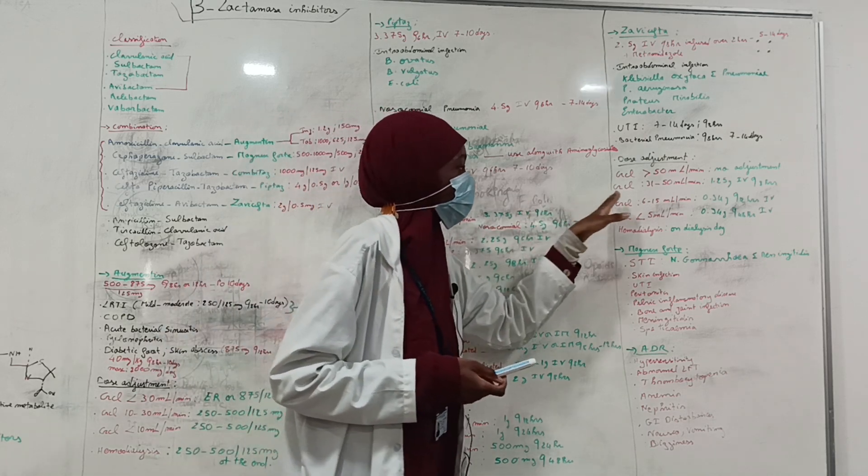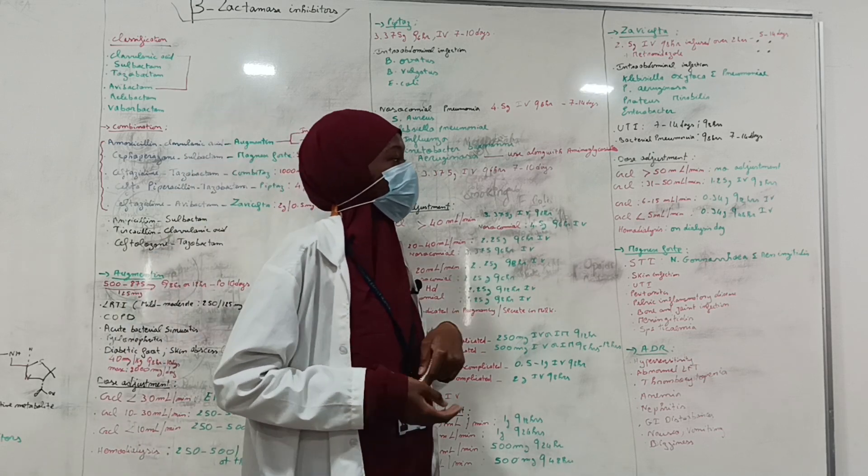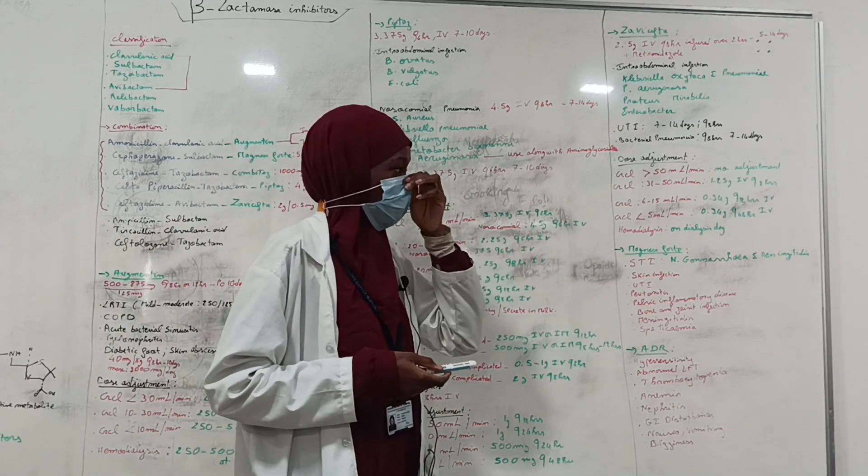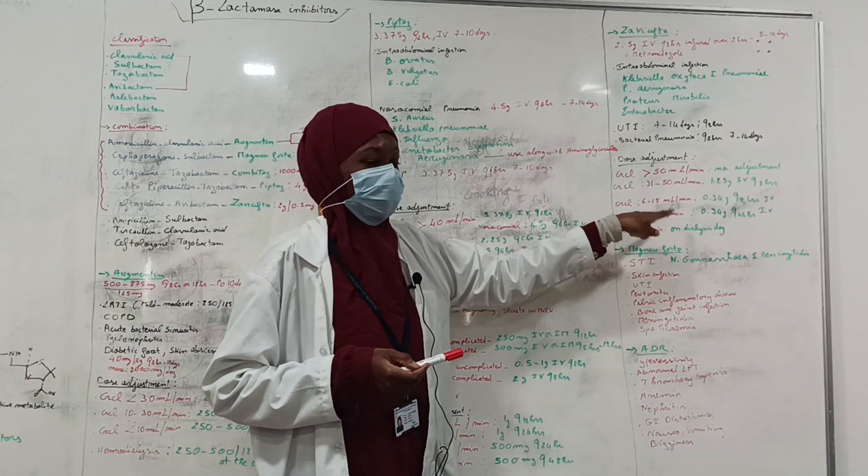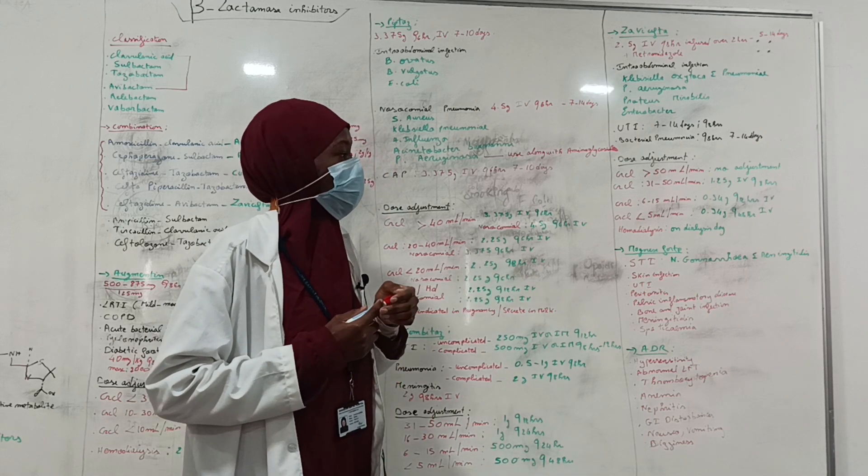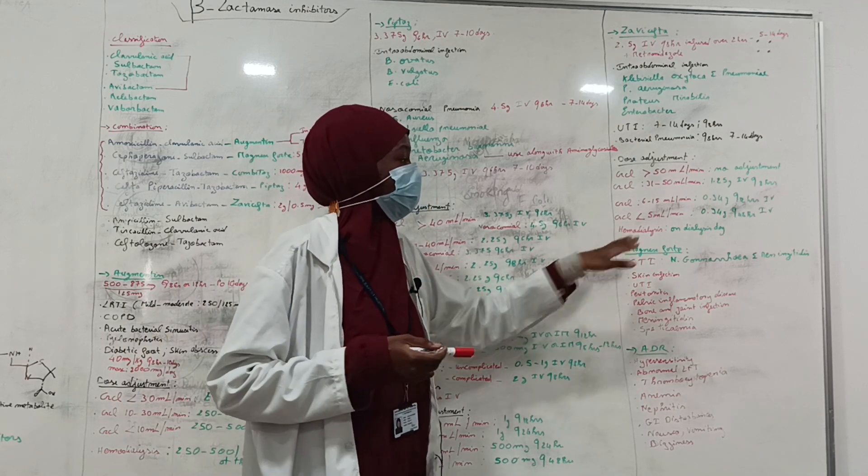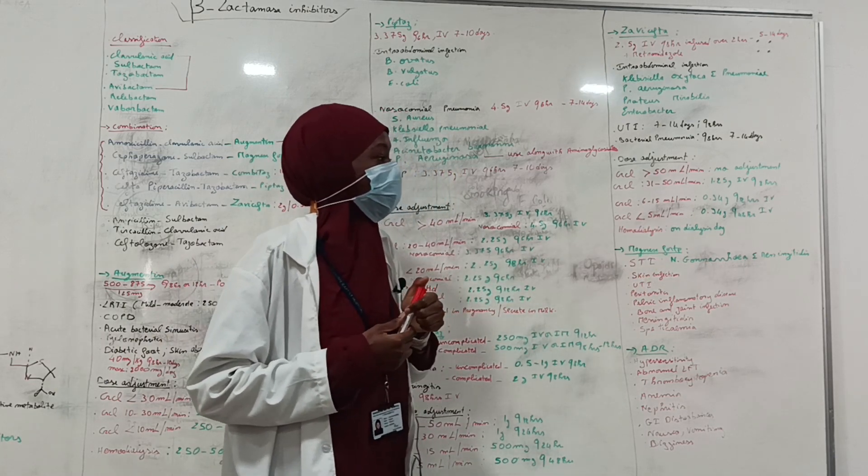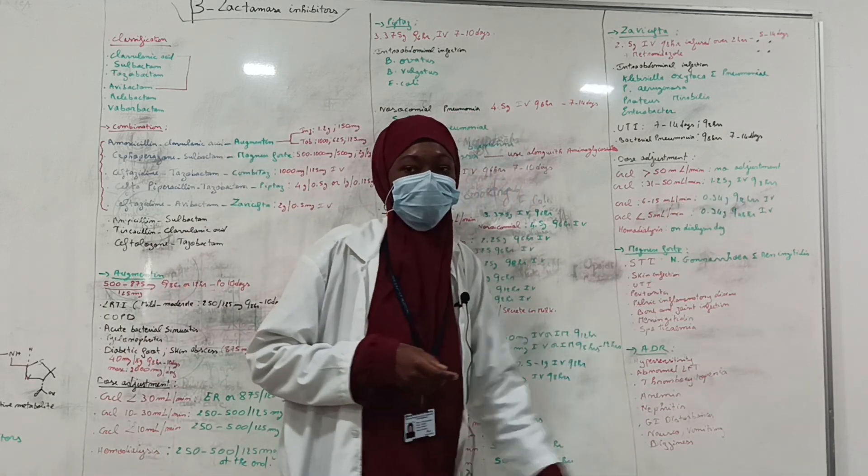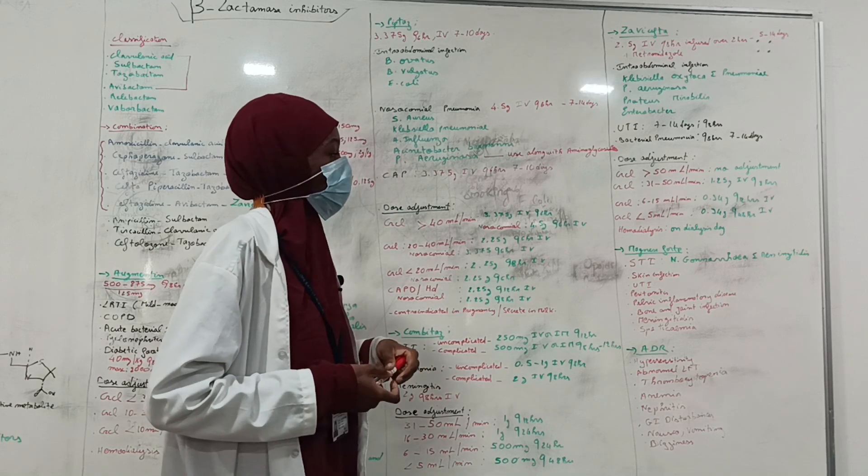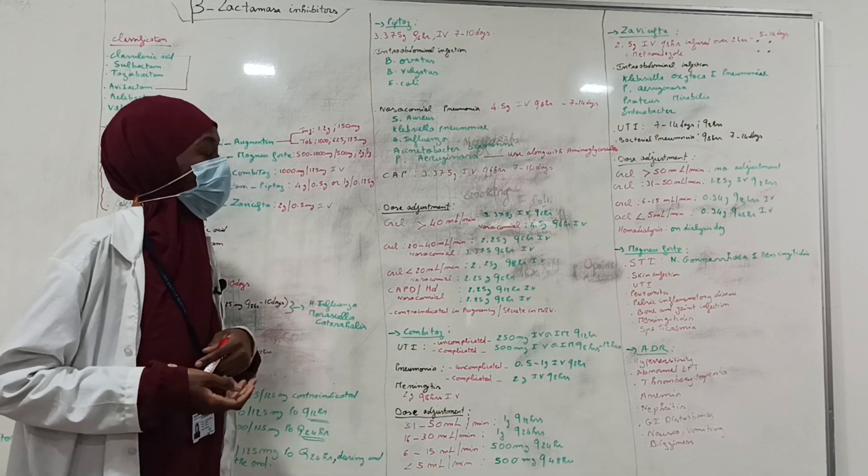Dose adjustment: when the creatinine clearance is more than 50 ml, there is no need for a dose adjustment. When it's between 31 to 50 ml, then 1.25 g every 8 hours should be used. When the creatinine clearance is between 6 to 15 ml, 0.94 g every 12 hours should be used. When the creatinine clearance is less than 5 ml, 0.94 g every 48 hours should be used. Basically, be careful with the timing. For patients on hemodialysis, it should be given on dialysis day.